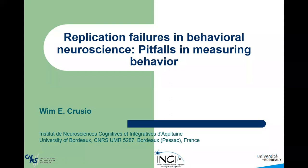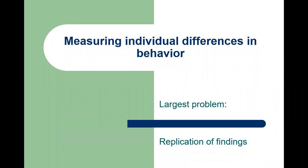This seminar series is about measuring behavior — specifically, measuring individual differences in behavior: why does one animal behave differently from another? As we all know, in recent years it has become more and more evident that the biggest problem in this field is the replication of findings. People report behaviors in mutants and strains, and then others try to replicate that and find something completely different.